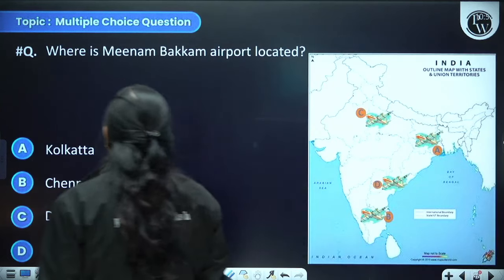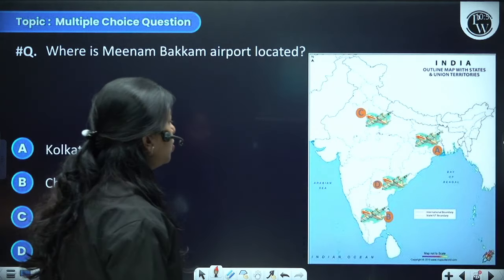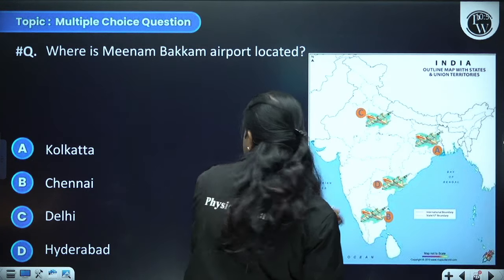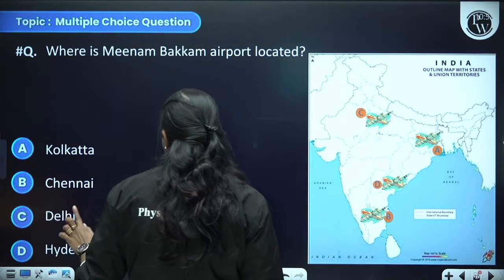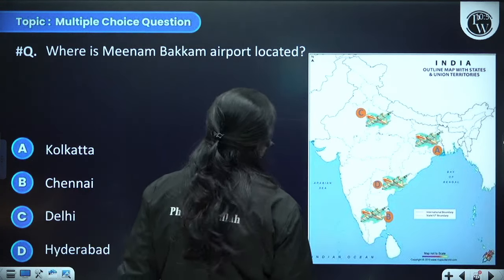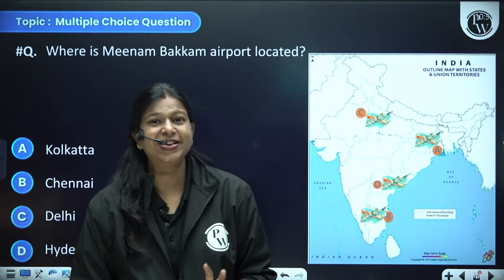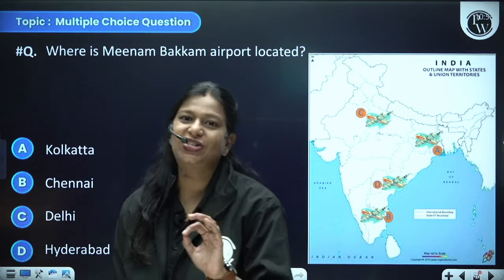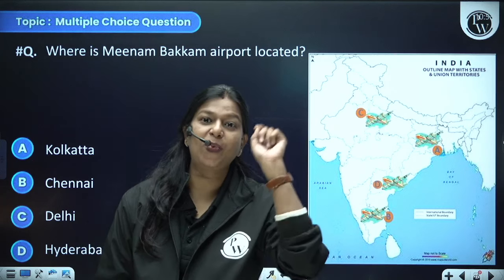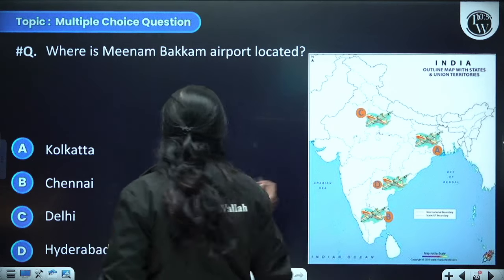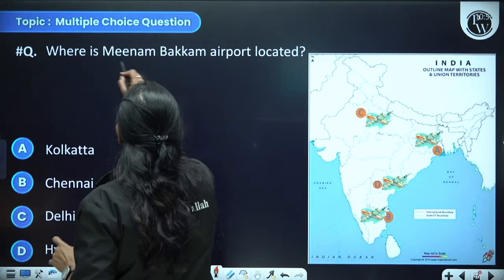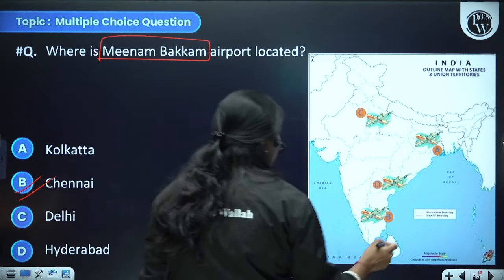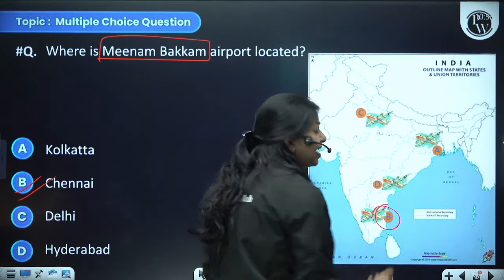Where is Meenambakkam airport located — Kolkata, Chennai, Delhi, or Hyderabad? Either you know it or you don't. Just make sure to memorize the important international airports. The Meenambakkam airport is in Chennai, which is in Tamil Nadu.